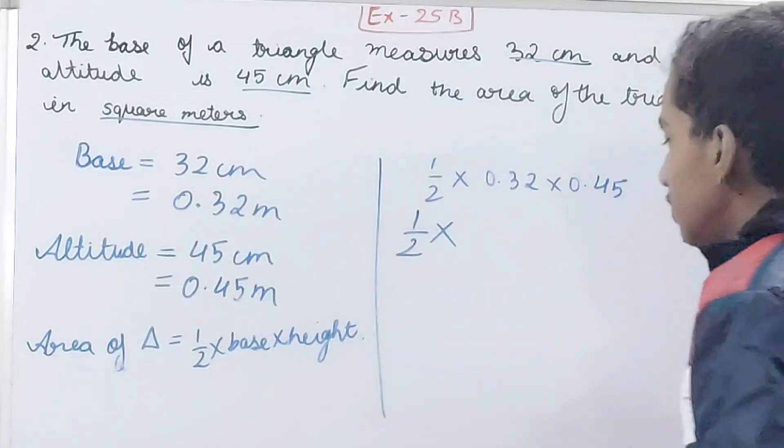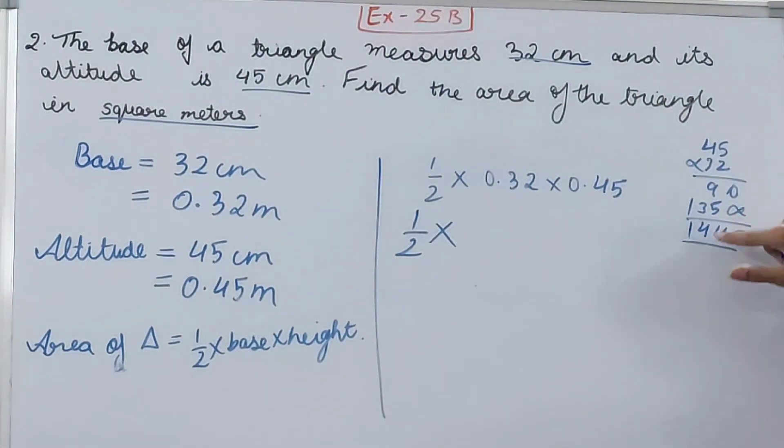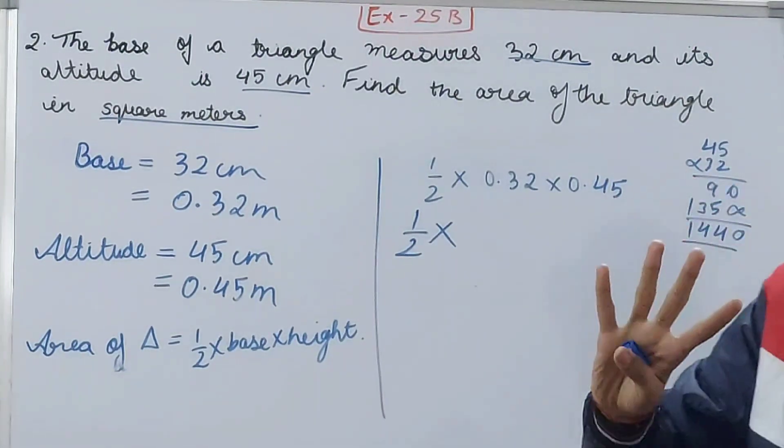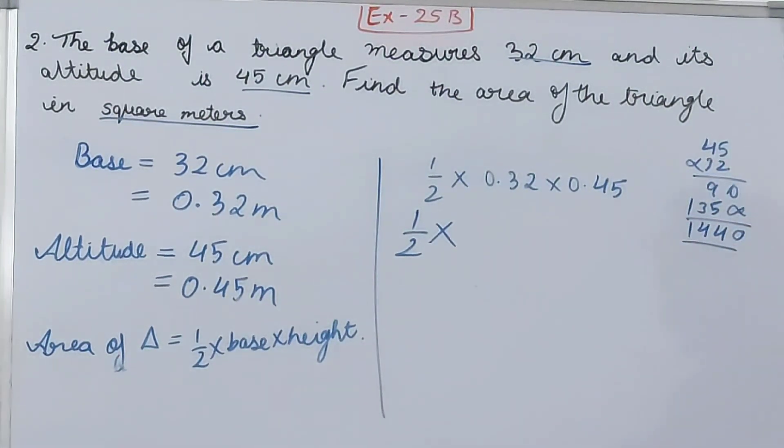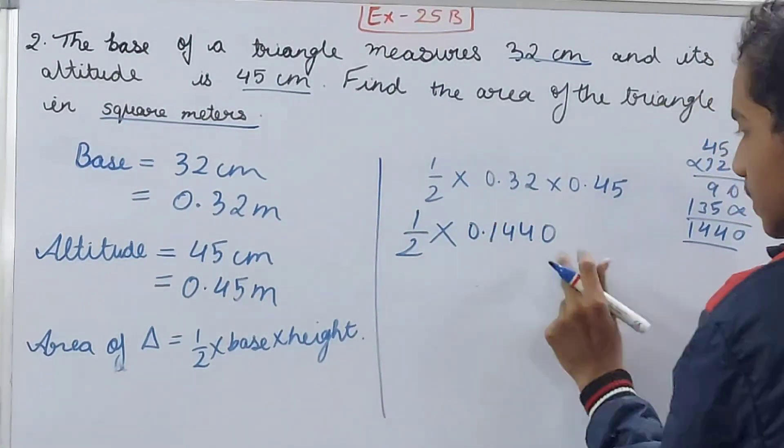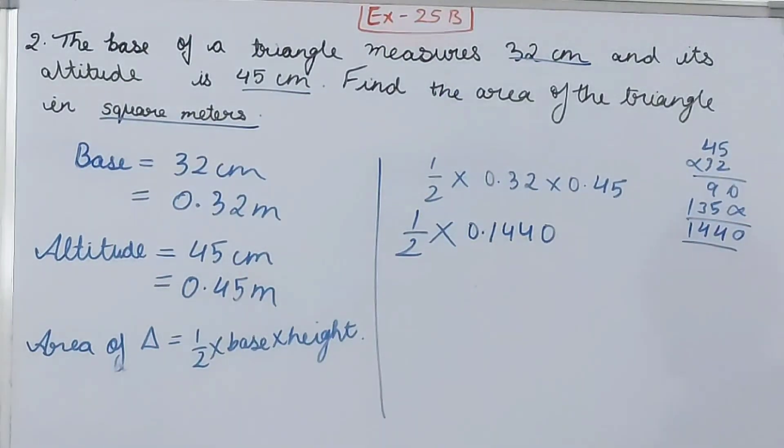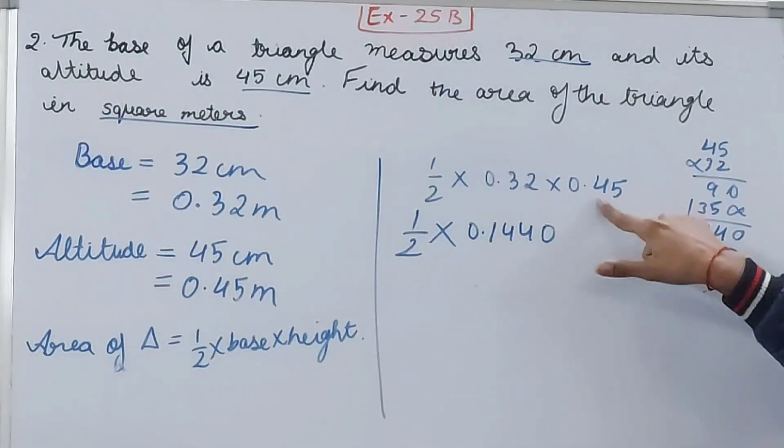Now you can see two decimal places here, two decimal places here, so we will put the decimal after four places because 2 + 2 = 4. So 0.1440—one, two, three, four, then decimal point. Four decimal places total. Now we have to divide by 2 also.